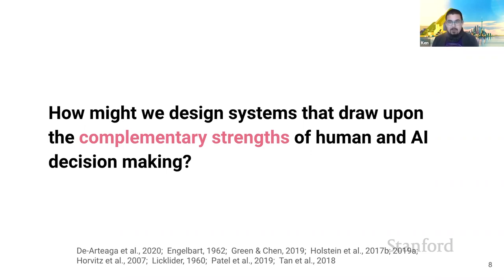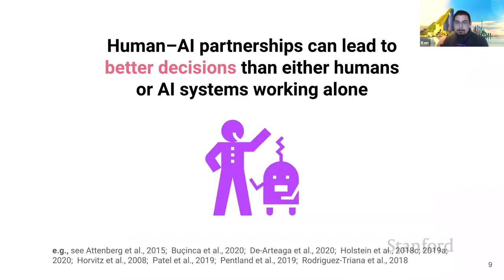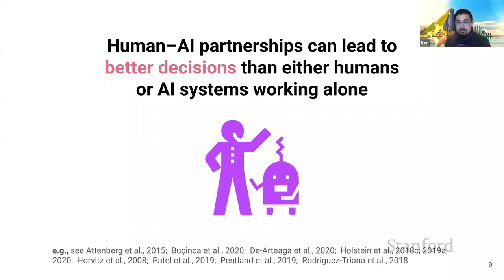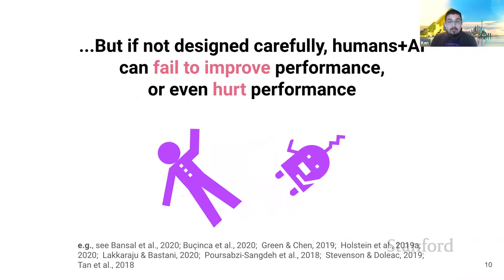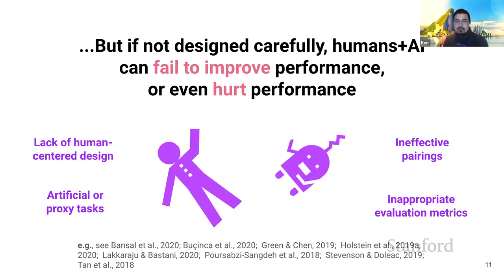The design of human-AI partnerships has been explored across a range of domains, but experiments evaluating their performance have shown mixed results. Several studies show that when humans and AI systems work together, this can improve decision-making compared with either humans or AI making decisions alone. Successful partnerships have been demonstrated between human experts and AI systems in radiology, as well as other domains. But if not designed carefully, human-AI collaborations can fail to improve or even hurt decision-making.